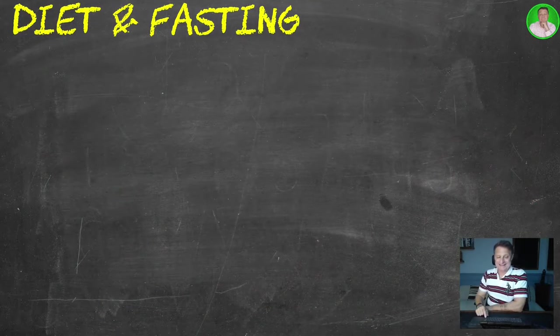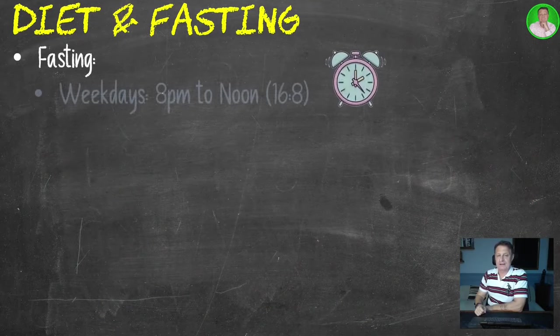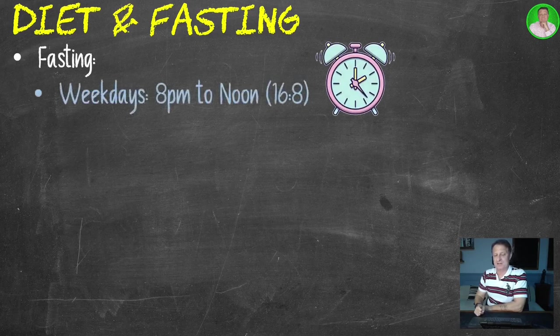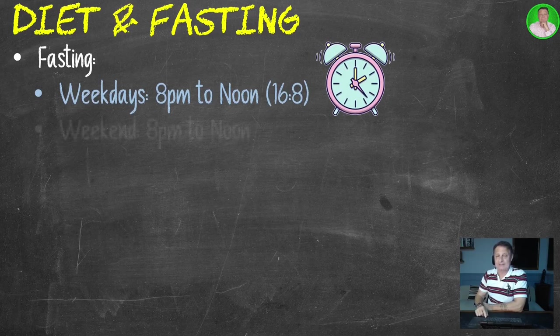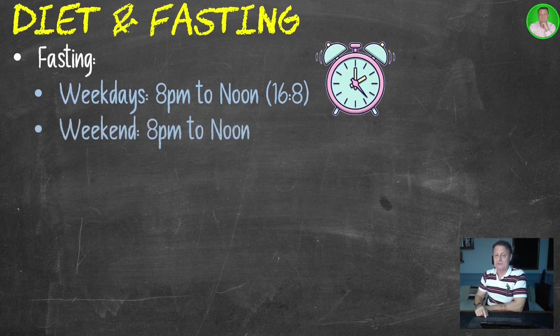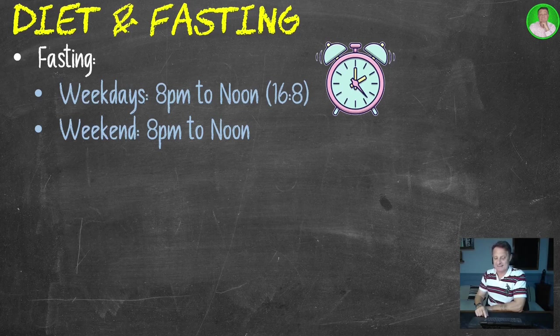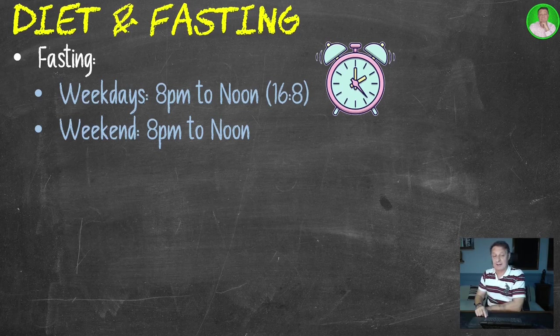Let's look at diet and fasting. During the week I practice 16-8, so I finish eating at 8 p.m. at night and don't normally eat until noon the next day. On the weekend, 8 p.m. till noon is normally what I do, unless we're out early in the morning having breakfast out, I might eat a little bit earlier. And in the same way, if I'm busy working, I may look at my watch and suddenly it's 2 in the afternoon. So 8 till noon, but sometimes a little before, sometimes a little bit after.